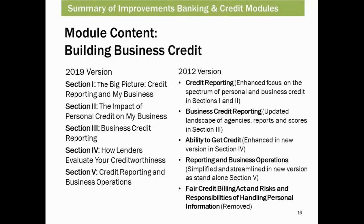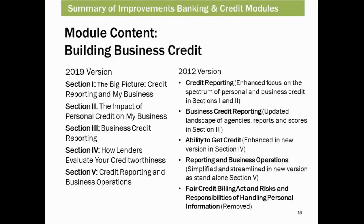On slide 16, we're going to talk about the Building Business Credit module, which is broken down into five sections: the big picture, the impact of personal credit on my business, business credit reporting, how lenders evaluate your creditworthiness, and credit reporting and business operations. As with the banking services module, key information has been enhanced and updated, with a greater focus on the spectrum of a business's reliance on both personal and business credit histories and the ways in which both impact their ability to access financing.